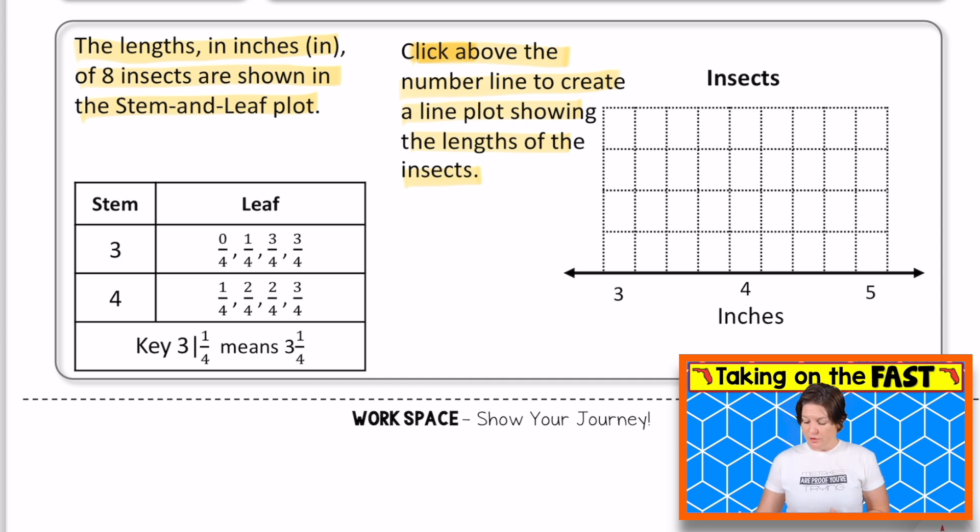Then we have three and one fourth, that would be this marking right here. And we have two, three and three fourths. So I'm going to skip over the three and two fourths and put two of them right here at three and three fourths. You can see that it goes the whole number, one fourth, two fourths, three fourths, whole number, one fourth, two fourths, three fourths, whole number. Okay, we have four pieces of data for our stem of three, and we've placed four pieces of data onto our line plot.